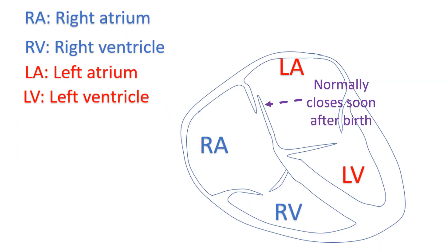When the pressure in the left atrium rises after birth as the lungs become functional and increase pulmonary venous return, it presses on the left side of the foramen ovale and closes it. Even if there is a residual opening, most of the time there is no shunting of blood across the PFO because left atrial pressure is higher than that in the right atrium.